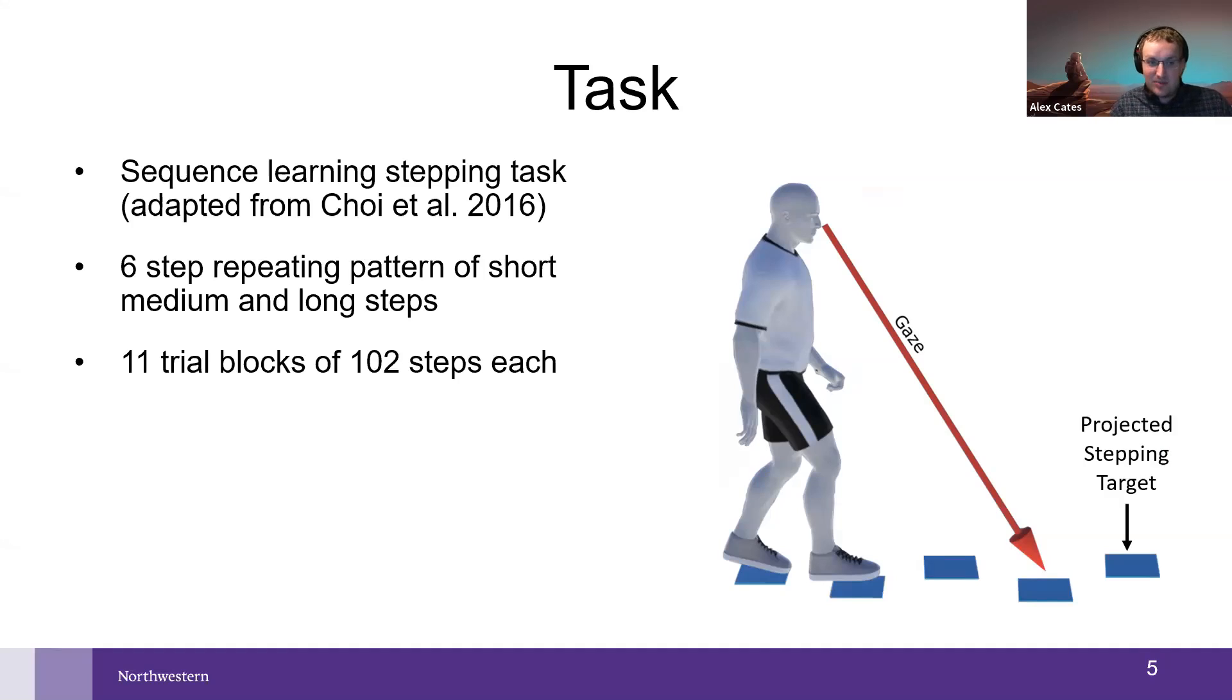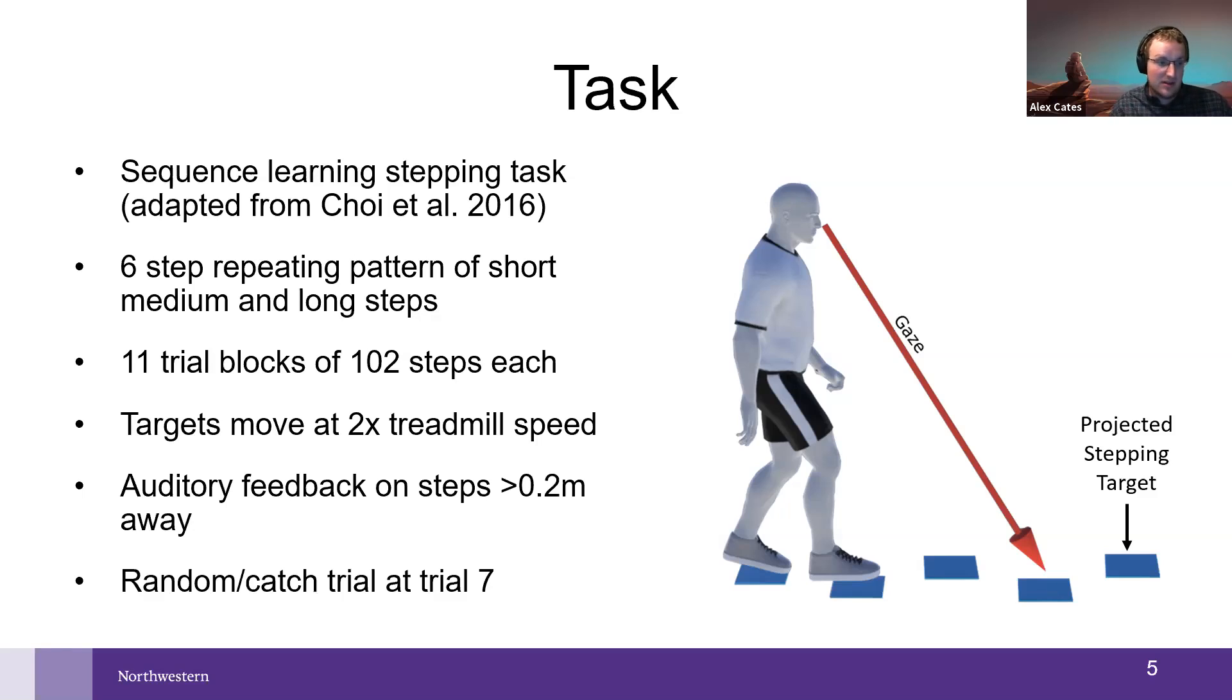They completed 11 trial blocks, each of around 100 steps. To make the task difficult enough, I actually had to increase the speed so their targets are moving faster than the treadmill. They also received auditory feedback—basically, if they stepped too far away from a target, they heard an error noise to make sure they were learning. To check that they were actually learning, I had a random catch trial at trial seven.